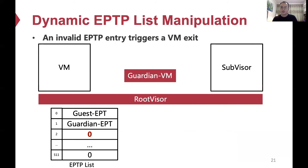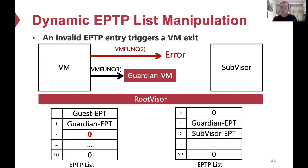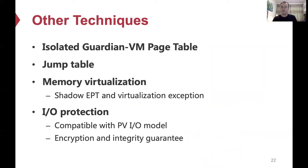To prevent attackers from bypassing the Guardian VM, we propose a new technique called dynamic EPTP list manipulation, which ensures that both the guest virtual machine and the sub-visor cannot bypass the Guardian VM before switching to each other. By default, most entries in the EPTP list are zero except entries zero and one, which point to the Guardian EPT and guest EPT respectively. Therefore, a malicious VM cannot use a self-prepared VM function instruction to bypass the Guardian VM — it will encounter an invalid EPTP entry, triggering a VM exit to wake up the root visor. The VM must enter the Guardian VM first, which clears EPTP zero and writes the base address of the sub-visor's EPTP to entry two. Finally, the Guardian VM executes another VM function instruction to switch to the sub-visor. For other designs of CloudVisor-D, such as memory virtualization techniques and I/O protection, you can refer to our paper for more details.